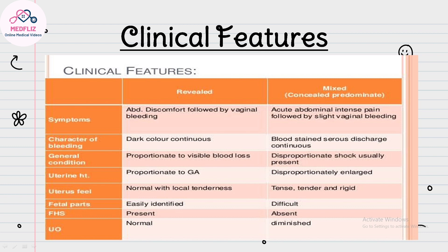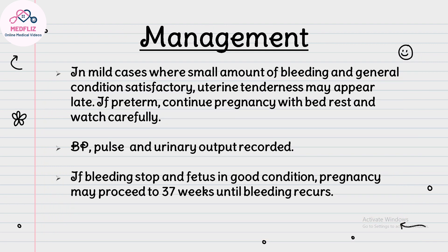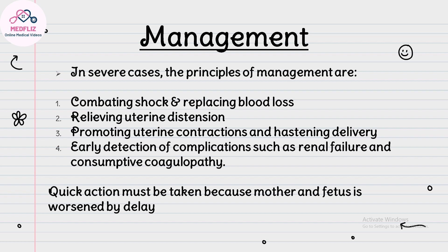In mild cases where there is a small amount of bleeding and general condition is satisfactory, if preterm, continue pregnancy with bed rest, carefully record vitals and urine output. If bleeding stops and the fetus is in good condition, pregnancy may proceed to 37 weeks until bleeding reoccurs. In severe cases, the principles of management are: combating shock and replacing blood loss, relieving uterine distension, promoting uterine contractions and hastening delivery, and early detection of complications such as renal failure and consumptive coagulopathy. Quick action must be taken as delay worsens both mother and fetus.